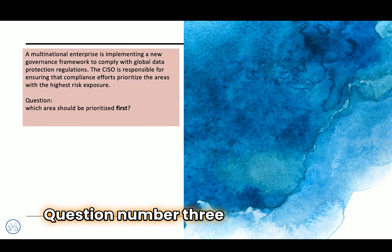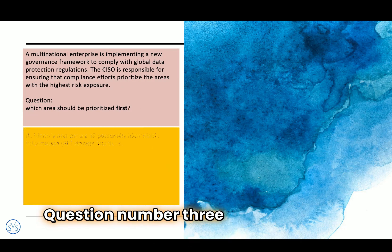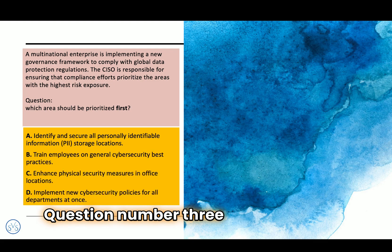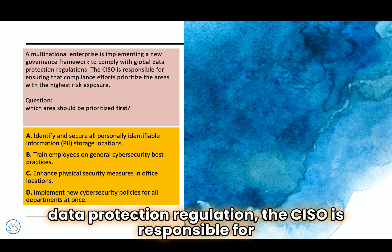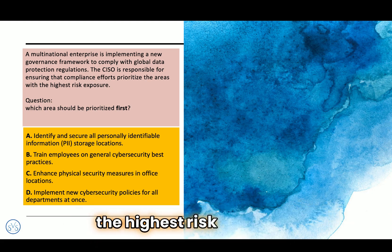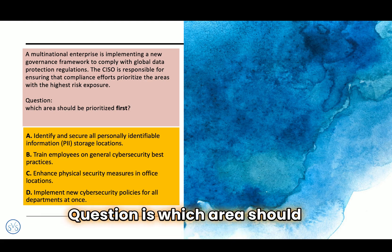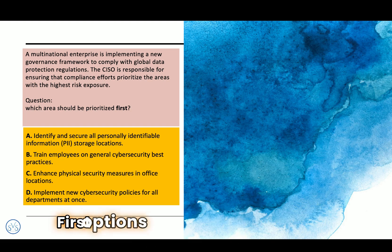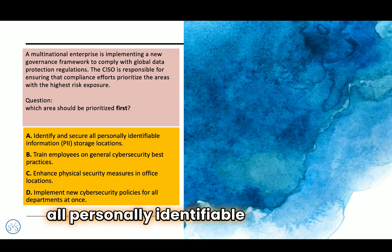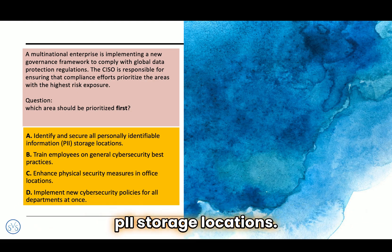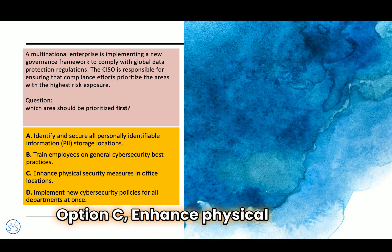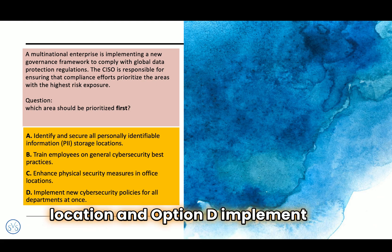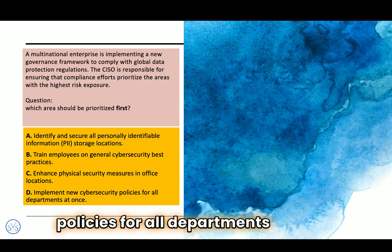Question number three. A multinational enterprise is implementing a new governance framework to comply with global data protection regulations. The CISO is responsible for ensuring that compliance efforts prioritize the areas with the highest risk exposure. Which area should be prioritized first? Options: A) identify and secure all personally identifiable information (PII) storage locations; B) train employees on general cybersecurity best practices; C) implement new cybersecurity policies for all departments at once.